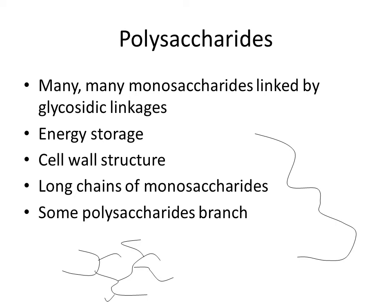Polysaccharides are many monosaccharides that have been joined together by glycosidic linkages. These are very important for storing energy and for cell wall structure. There are different types of polysaccharides — some are just monosaccharides linked together in a long chain, and some polysaccharides have branches where there are many chains linked together, as you can see at the bottom left.